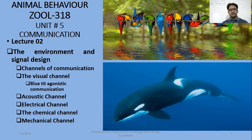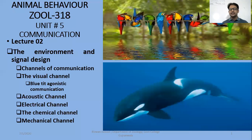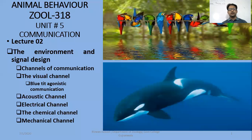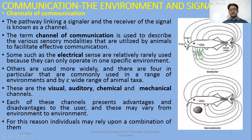What kind of environment influences different sorts of communication, and different types of ways of communication have been discussed. For example, we will talk about the visual channels. We have discussed agonistic behavior, which we have discussed earlier in detail about the visual channels. Sound channels, acoustic channels, electrical channels, chemical channels, and mechanical channels will be discussed as ways of communication. Before, we have discussed the introduction of communication types: chemical communication, sound, visual communication, acoustic communication. After these channels, we have discussed different types of signals and evolution and how they are used according to the environment.